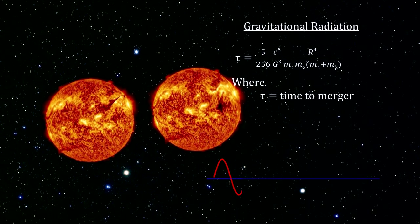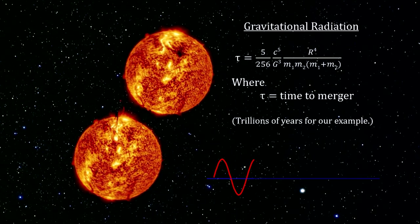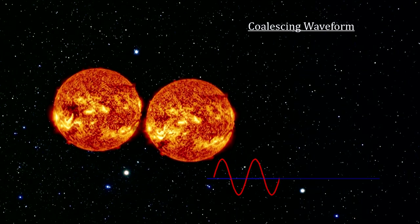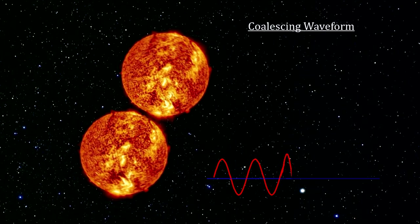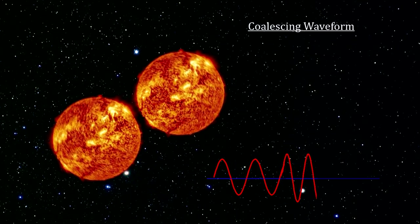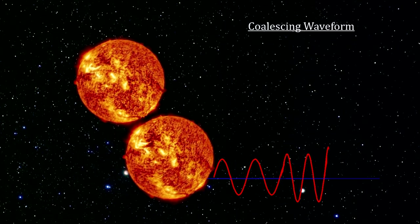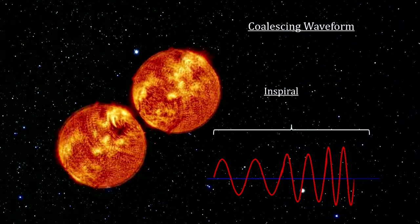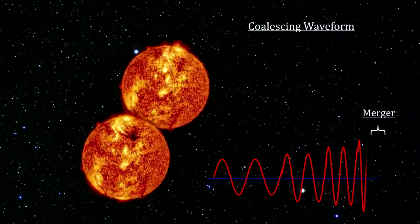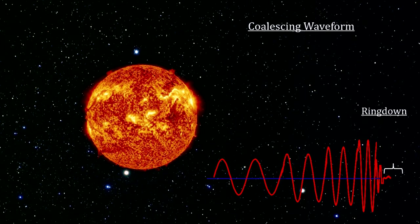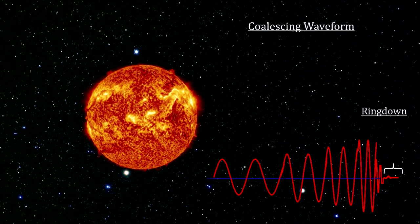With a decaying orbit, the objects will eventually collide and coalesce. The resulting waveform, called a coalescing waveform, serves as a signature for this kind of gravitational wave source. It has three phases, the in-spiral, the merger, and the ring down to an object that is no longer asymmetric and therefore no longer radiating gravitational waves.